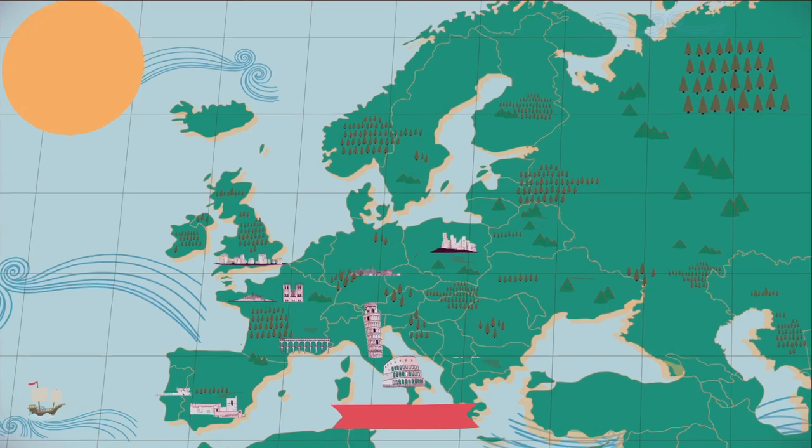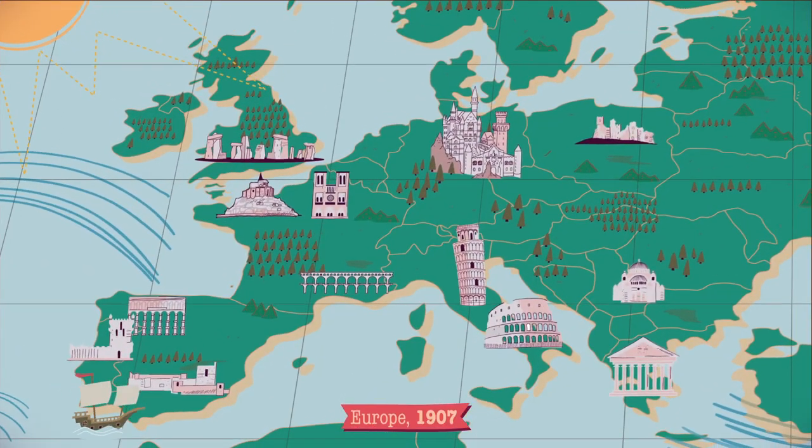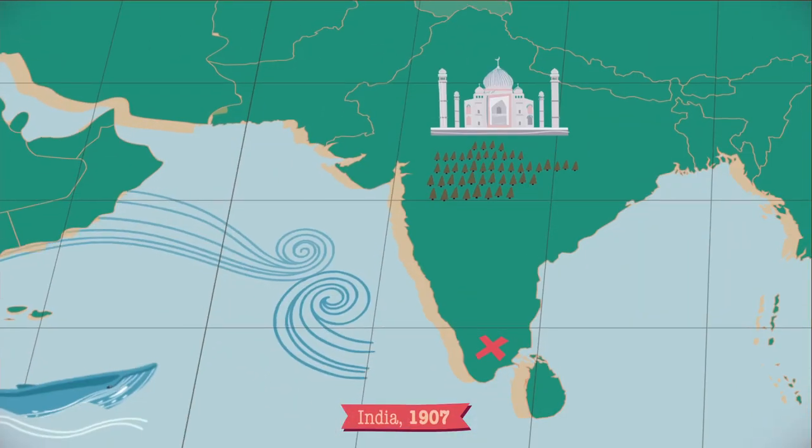The existence of gas motions in the penumbra of sunspots was discovered by British astronomer John Evershed more than a century ago.